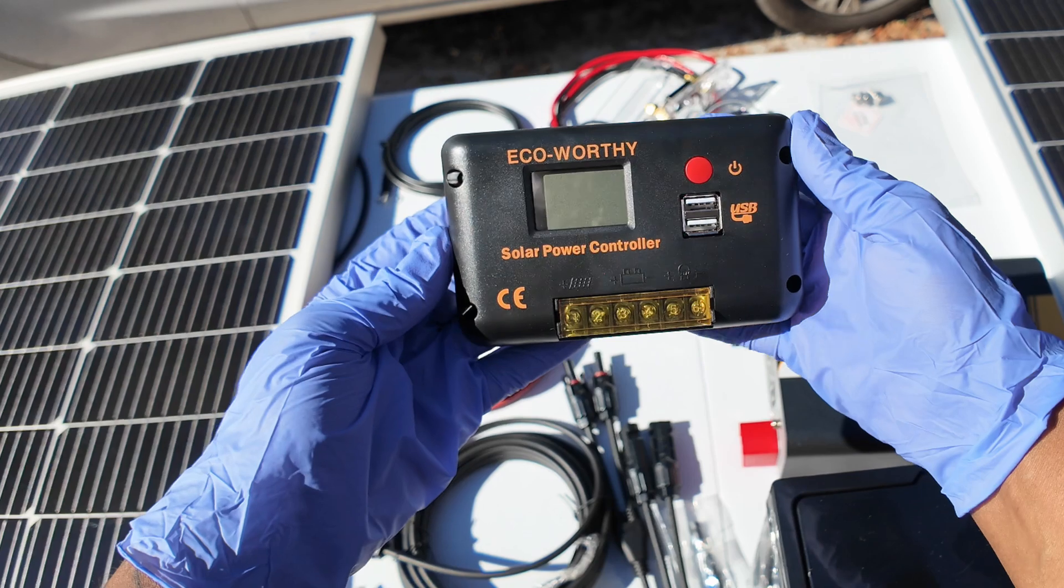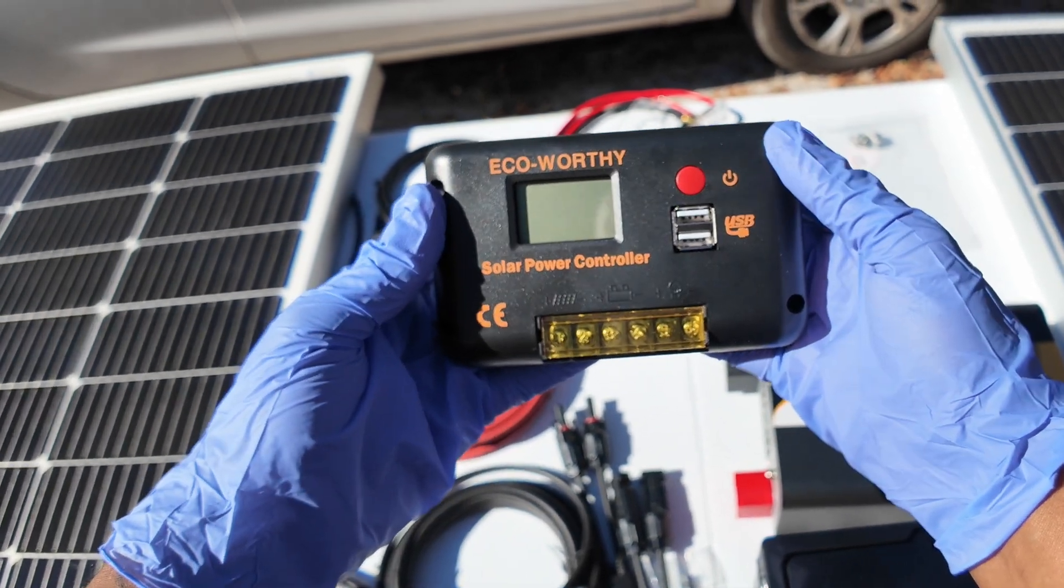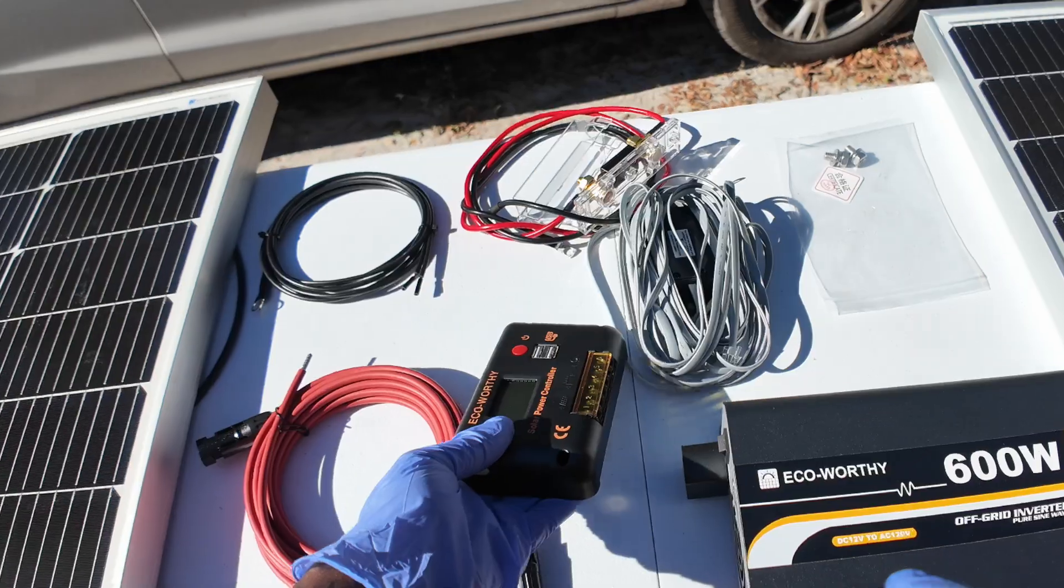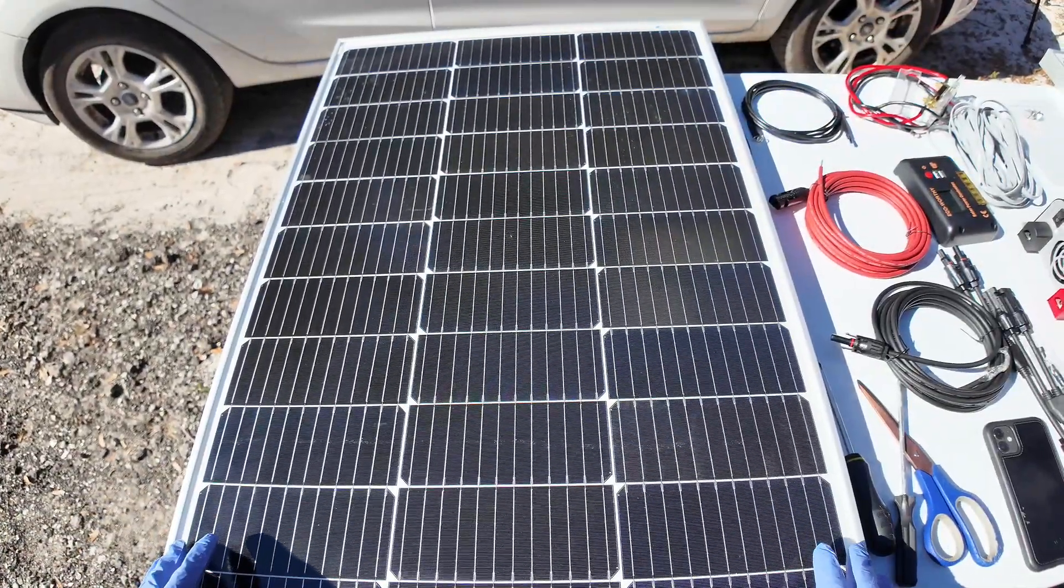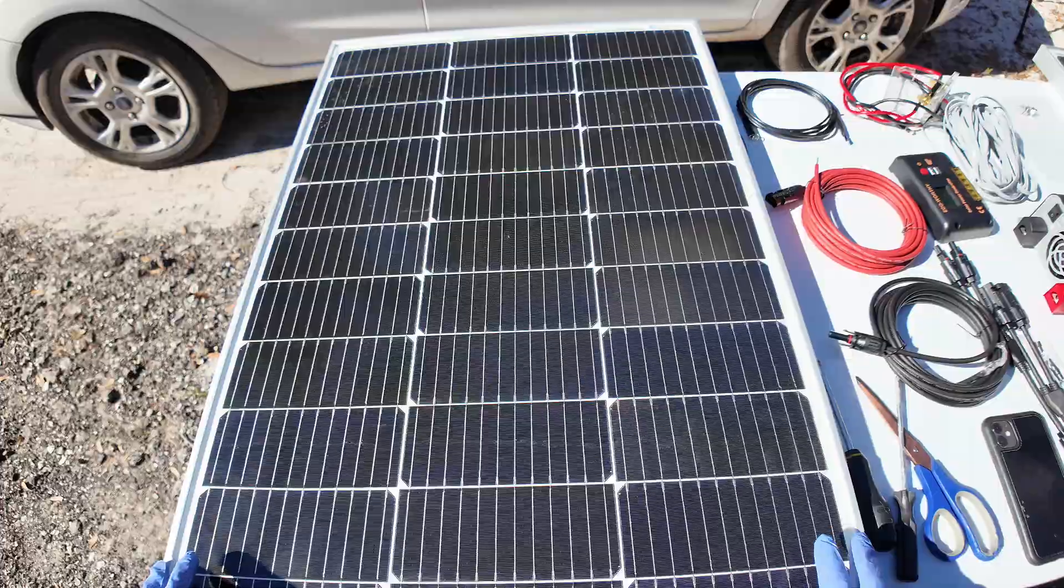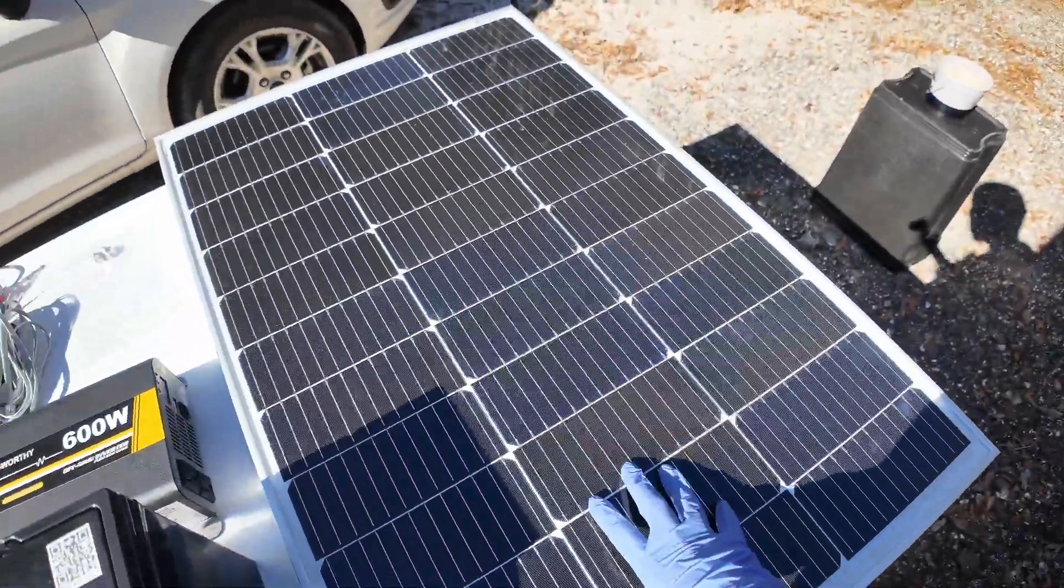This is a 30-amp charging controller with an LCD display and a dual USB port. And then we have our solar panels. This is a 100-watt solar panel, so we have two 100-watt solar panels, and we're just going to put that together.